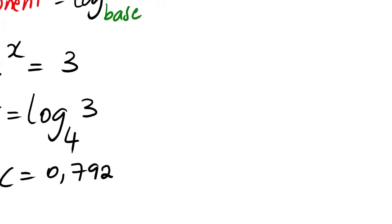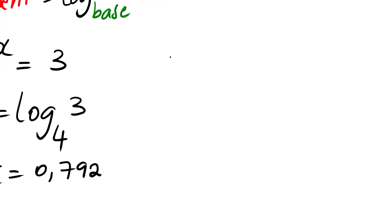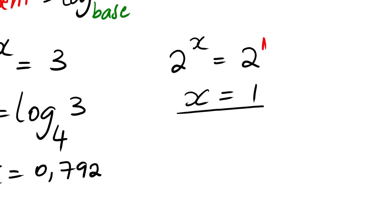We can also prove this. Suppose we have 2 to the power x equals 2. As you all know the laws of exponents — if we have common bases we can simply drop the bases and equate the exponents. In this case we know that the exponent of this 2 is 1, so we drop the bases and we are left with x equals 1.